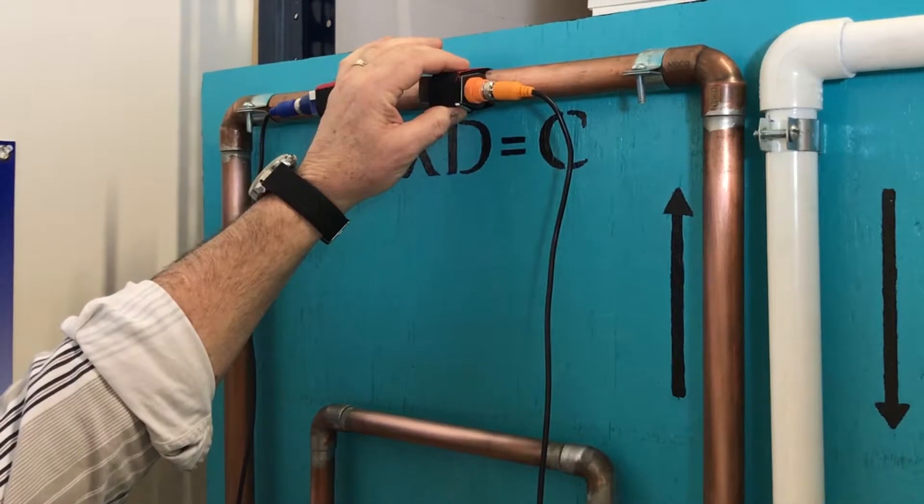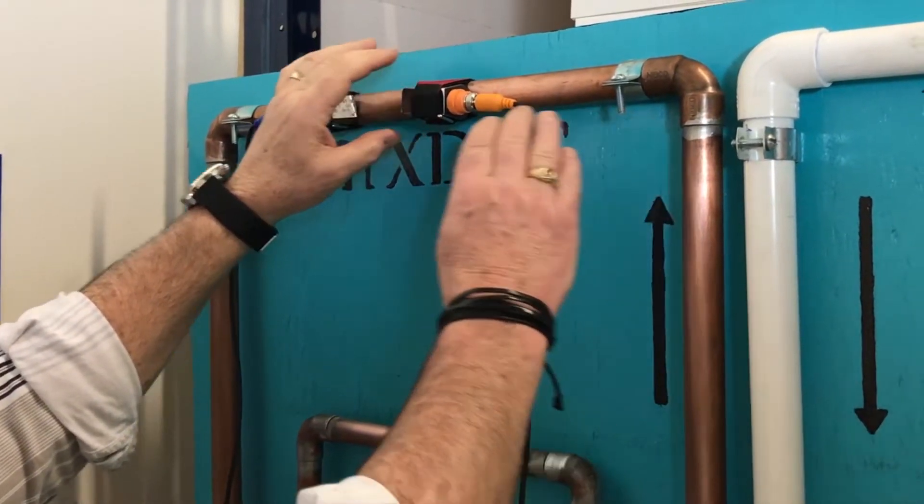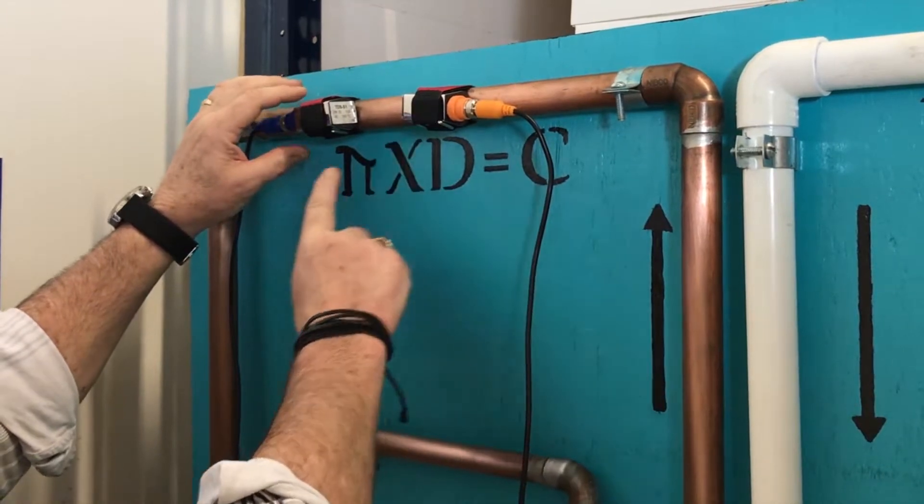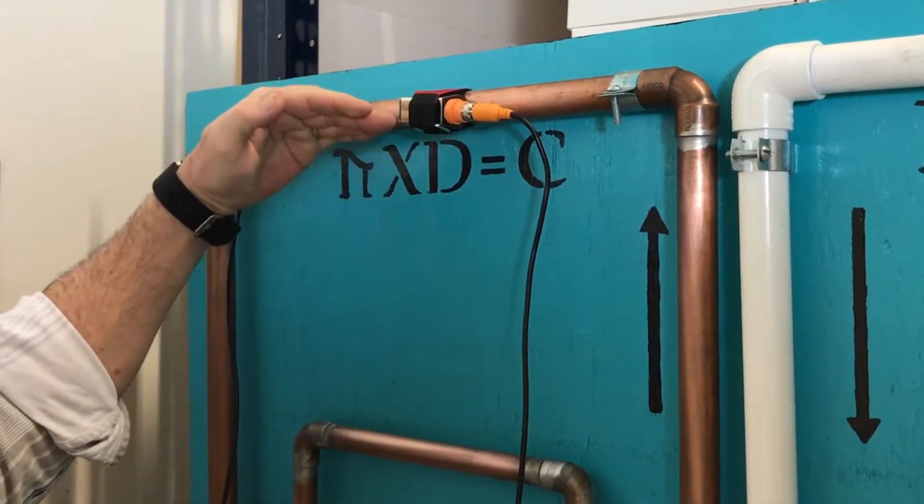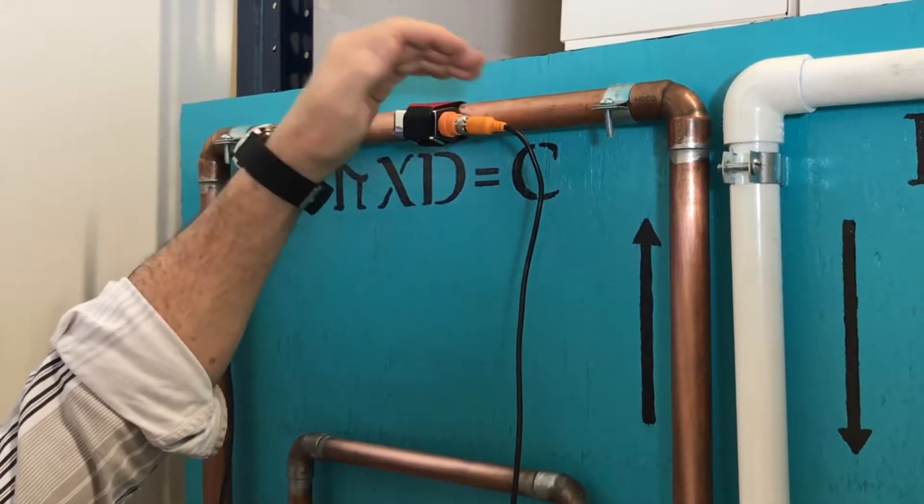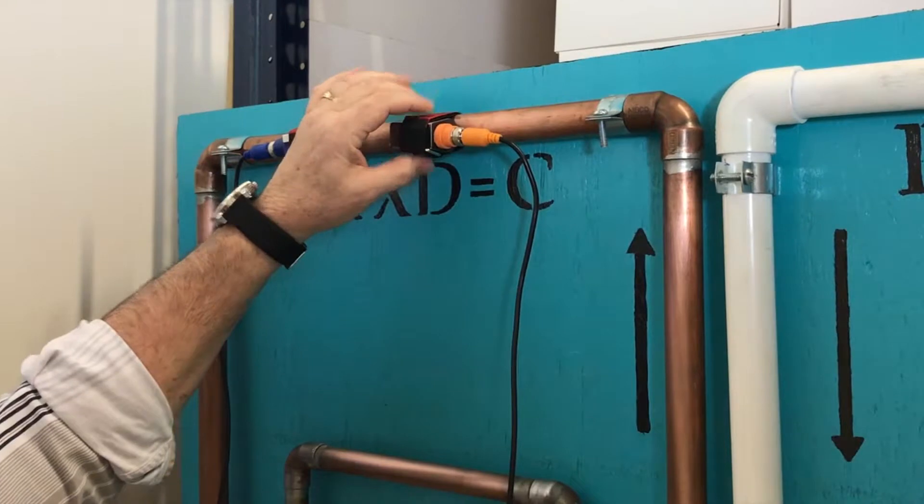It's color-coded orange. This has to go in the direction of the liquid flowing through the pipe on the upflow. The blue one is the downflow sensor. Make sure they're at 90 degrees in case of turbulence or air bubbles in the top of the pipe. It will not affect the reading on your meter.